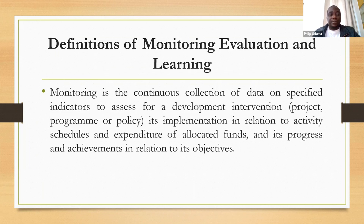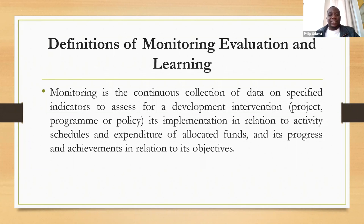Now let me define the specifics. We start with monitoring. Monitoring is a continuous collection of data on specified indicators for a development intervention — a project, program or policy. It is implementation in relation to activity schedules and expenditure for allocated funds, and its progress and achievement in relation to its objectives. So we monitor specific indicators — when you're coming up with a work plan, you normally develop indicators. For example, number of people reached. If it's a project reaching out to school children, you need to monitor how many you have reached and what your target was for that quarter.